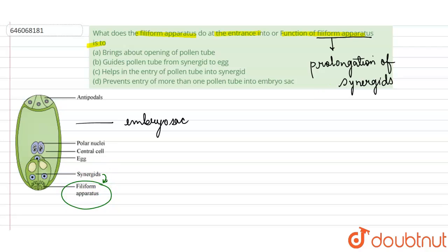This filiform apparatus has a major function. They help to lead the pollen tube into the synergids. So they lead the pollen tube. As they lead the pollen tube into the synergids, they help in releasing the male gametes.